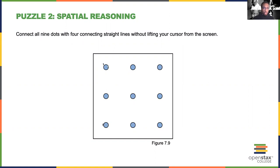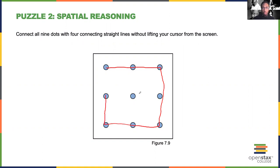For example, you could go like this — that's one straight line — and then like this, that's another straight line, and then like this would be another straight line. That gives you three straight lines, but there's no way to get a straight line that goes through both of these remaining points.